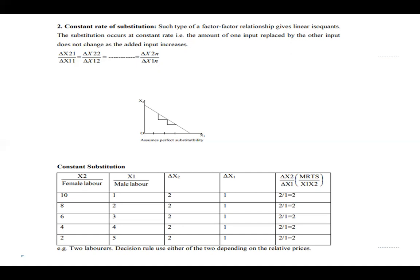This relationship is expressed in equation form: the ratio of change in x2 to change in x1 remains the same across all input combinations — that is, Δx2₁/Δx1₁ = Δx2₂/Δx1₂ = ... = Δx2ₙ/Δx1ₙ. This is called the constant rate of substitution, and when it holds the isoquant is always linear — a straight line.